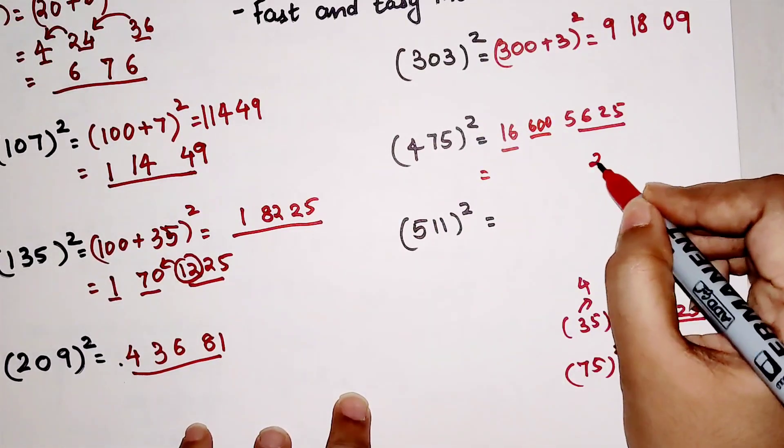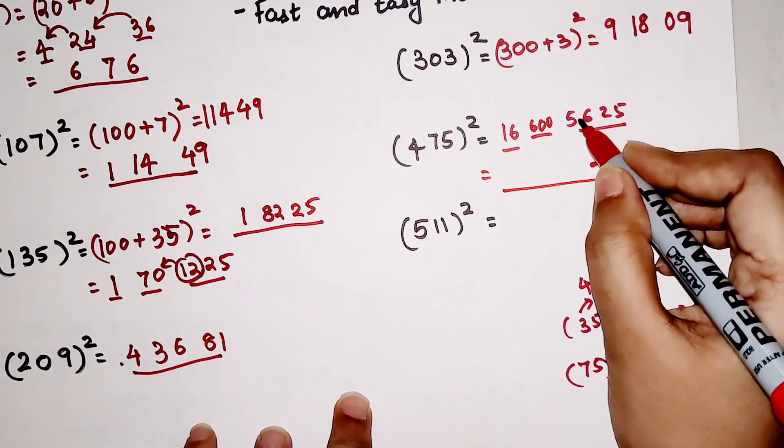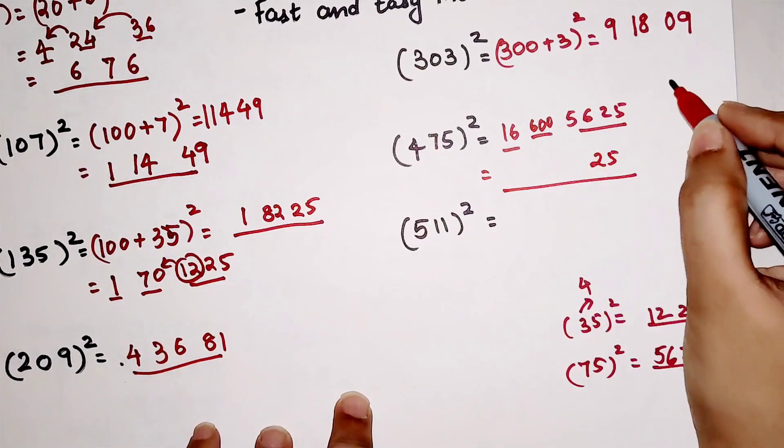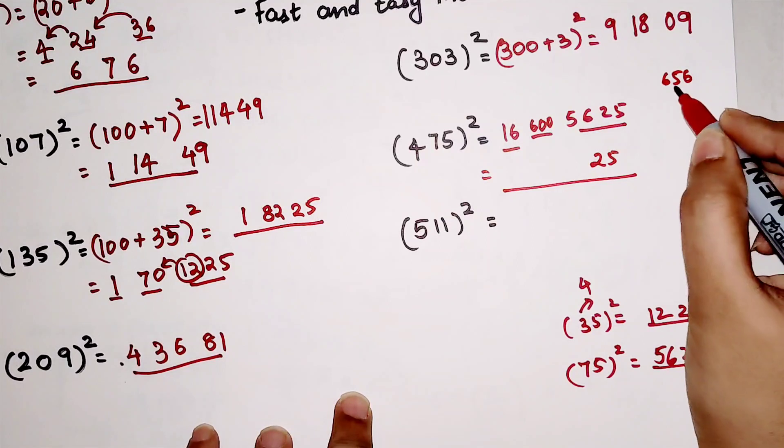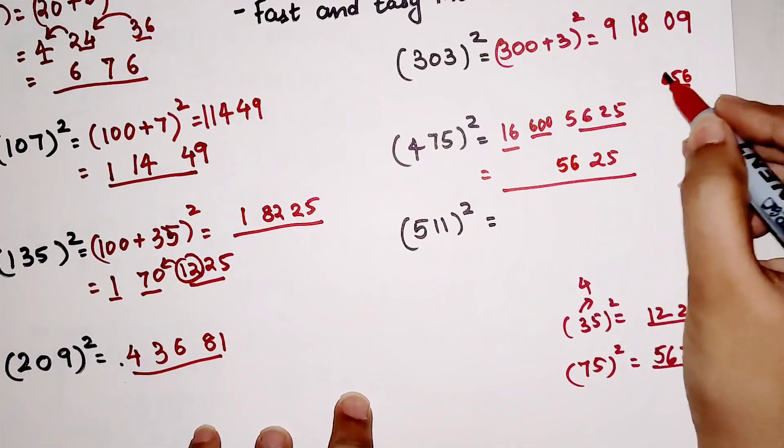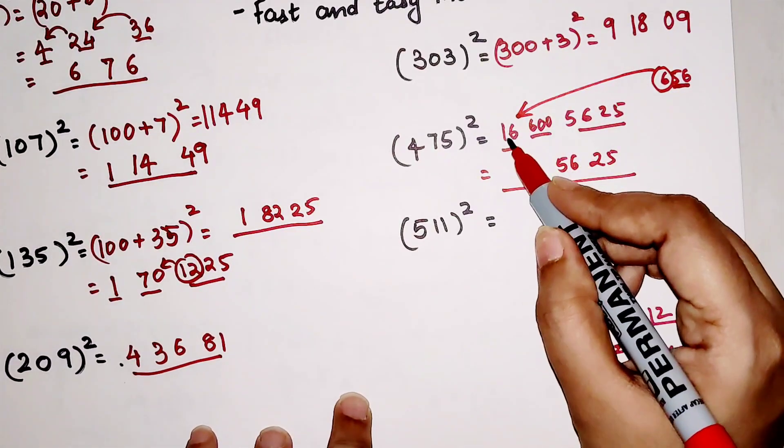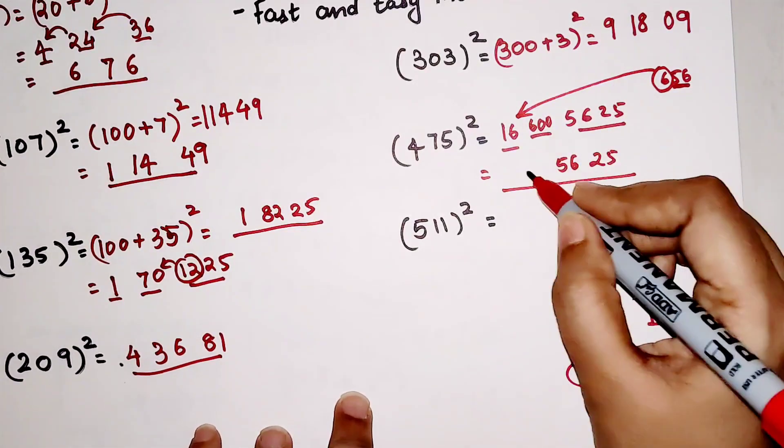So your final answer will be having 25. This 56 added to 600 gets you 656. From 656 we will just take the last two digits. So 56 will be taken over here. This 6 will get added to your 16. So your answer will now become 16 plus 6, that gets you 22. So the answer is 225,625.